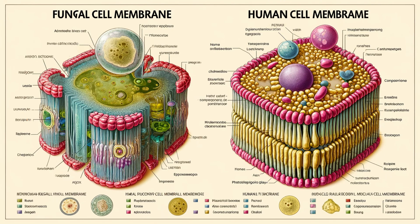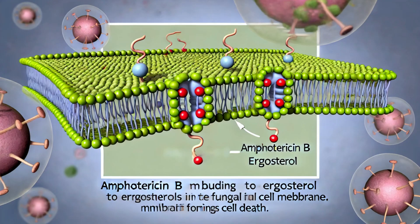Fungal infections are tackled by exploiting differences in cell membrane composition. Fungal cell membranes contain a substance called ergosterol, which is absent in human cell membranes. Antifungal drugs like amphotericin B bind to ergosterol, disrupting the membrane and killing the fungus. Human cells, which contain cholesterol instead of ergosterol, remain unharmed. Amphotericin B creates pores that increase membrane permeability, leading to leakage of essential intracellular components and eventually cell death — selective targeting crucial in treating life-threatening systemic fungal infections.